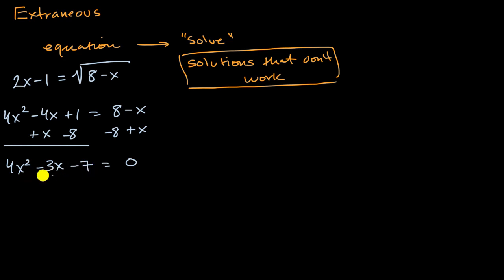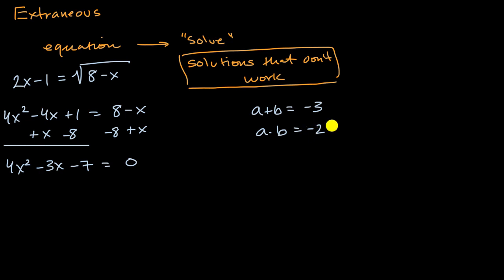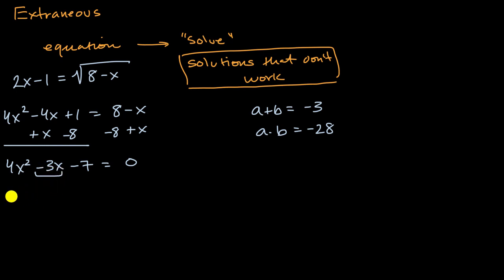We have an interesting quadratic here. It looks factorable by grouping — we need two numbers a and b where a plus b equals negative three and a times b equals four times negative seven, which is negative 28. The obvious ones are four and negative seven: four plus negative seven equals negative three, and four times negative seven equals negative 28. So we can break negative 3x into positive 4x and negative 7x.